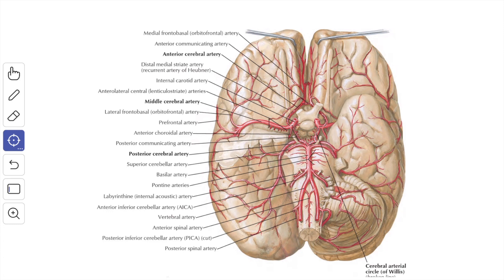The terminal branches of the internal carotid artery are the anterior cerebral artery and the middle cerebral artery. The anterior cerebral artery is the smaller branch; it runs forward and medially above the optic nerve to the commencement of the median longitudinal cerebral fissure.